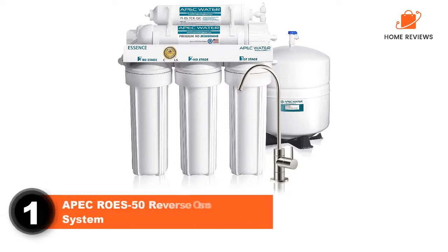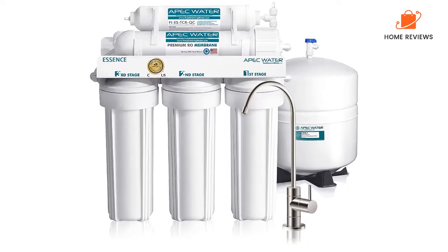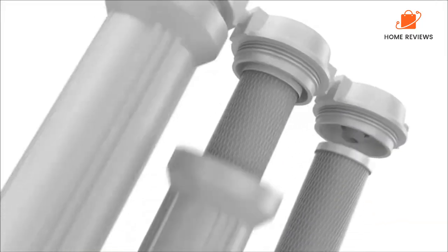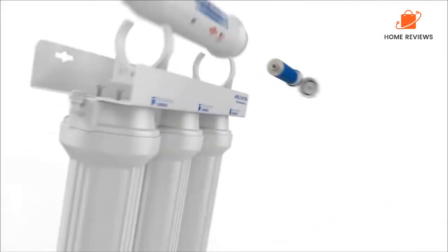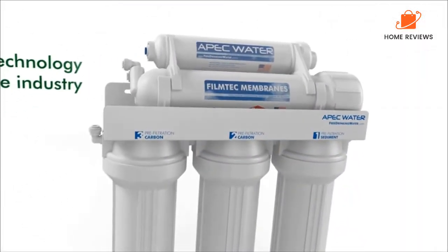Number 1: APIC ROES50 Reverse Osmosis System. The APIC ROES50 is a great option for improving tap water quality. This five-stage reverse osmosis system removes up to 99% of the most common contaminants found in tap water, including lead, chlorine, bacteria, copper, fluoride, and iron.